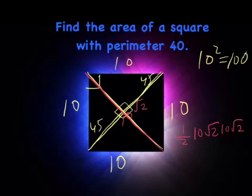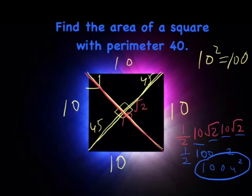I have 10 times 10, which is 100. I still have the half out front. √2 times √2 is 2. And 1/2 of 100 is 50 times 2 is 100. So that's in square units as well. You'll notice we get the same answer there in both cases.